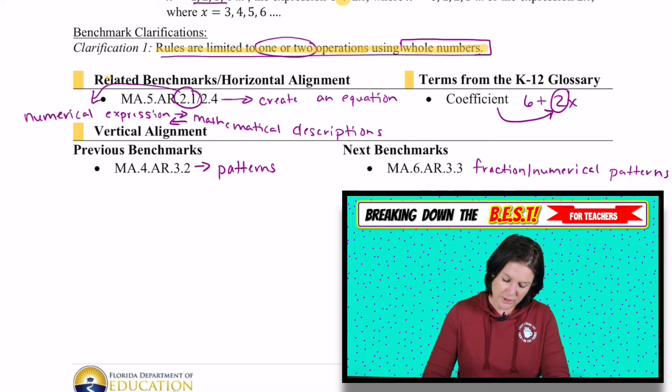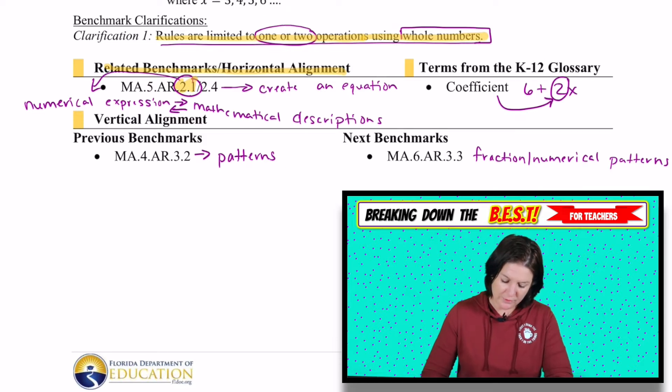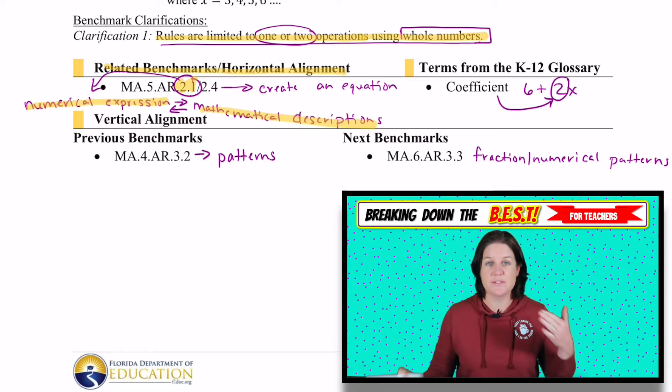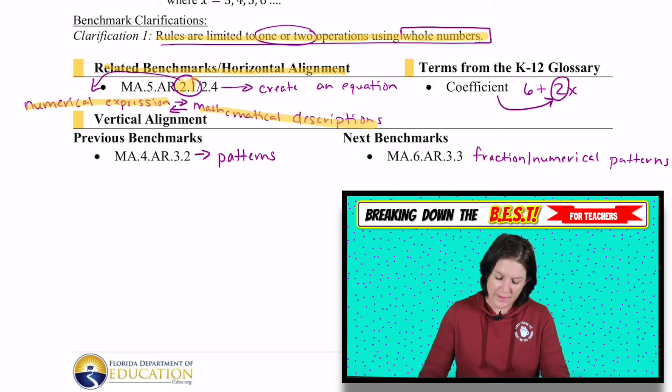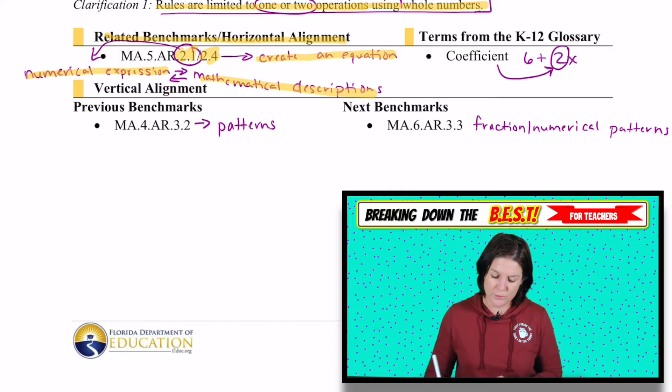Some related benchmarks that are used and aligned with this standard. This AR.2.1 is where we are going from numerical expressions to mathematical descriptions and vice versa. And also this 2.4 standard for AR is where they are given a situation and they have to create an equation. So in this case, we're given a pattern and we have to create or identify the rule being used.